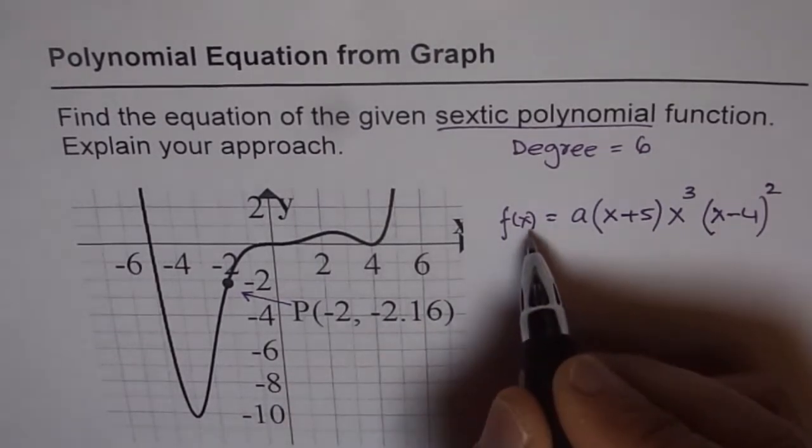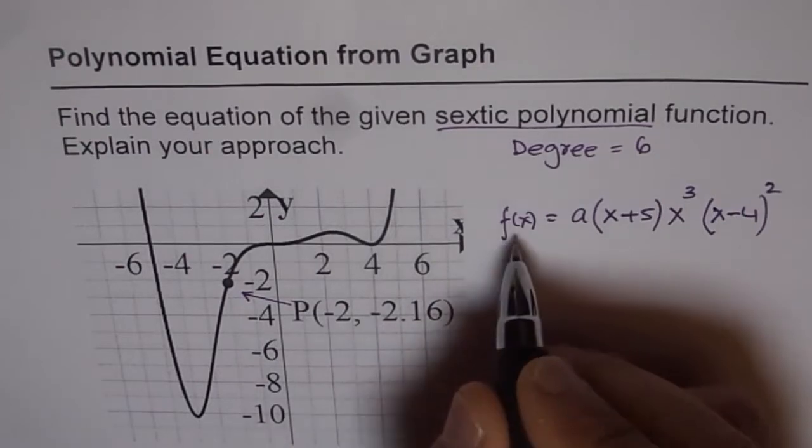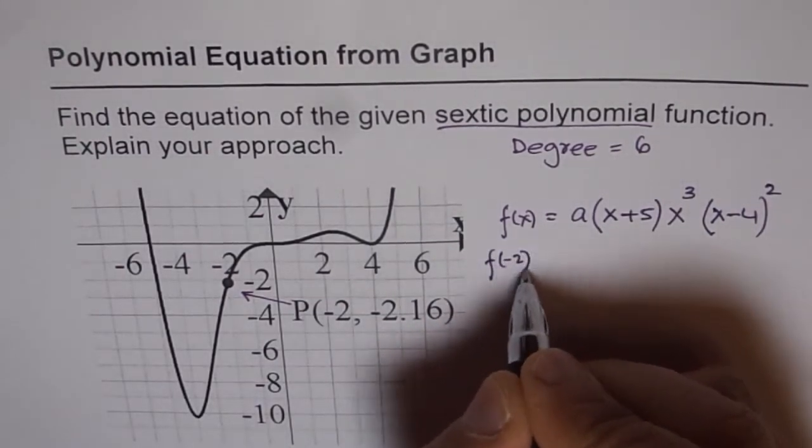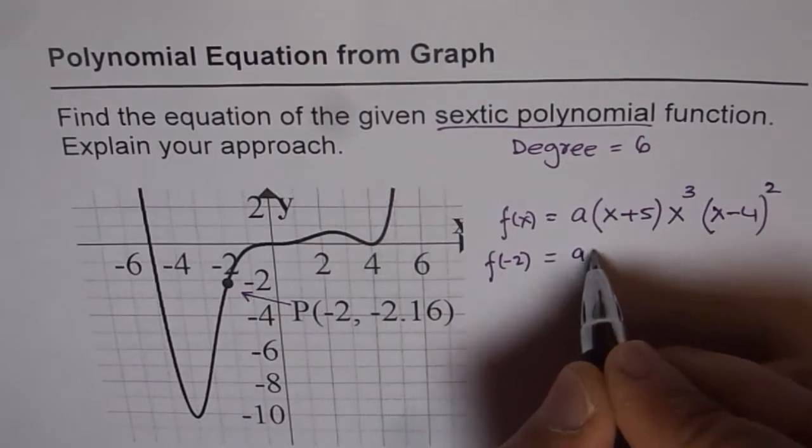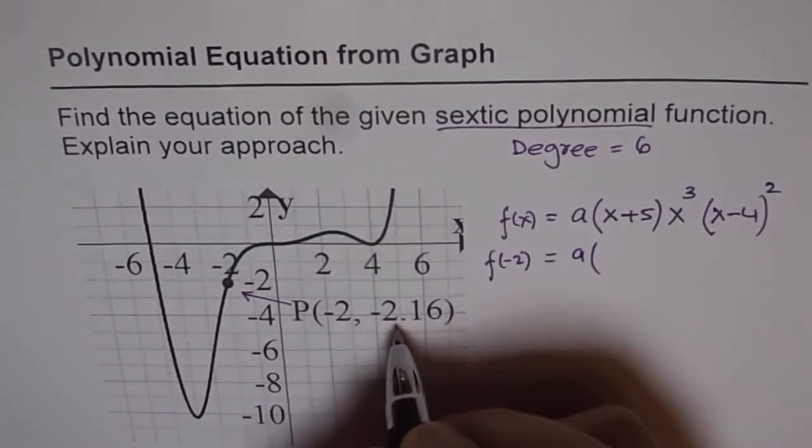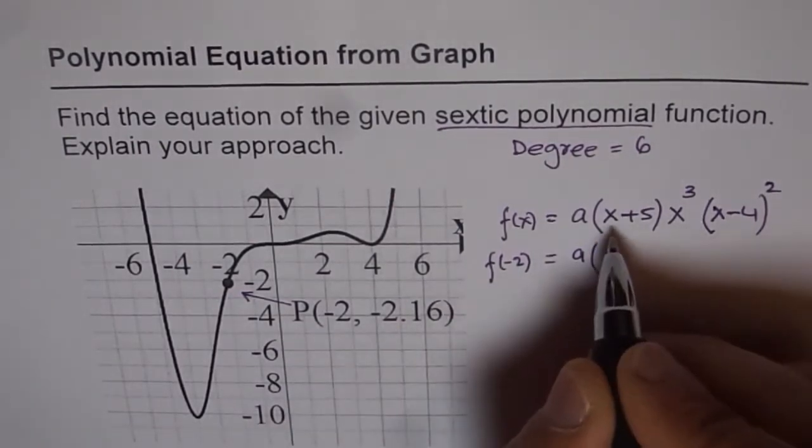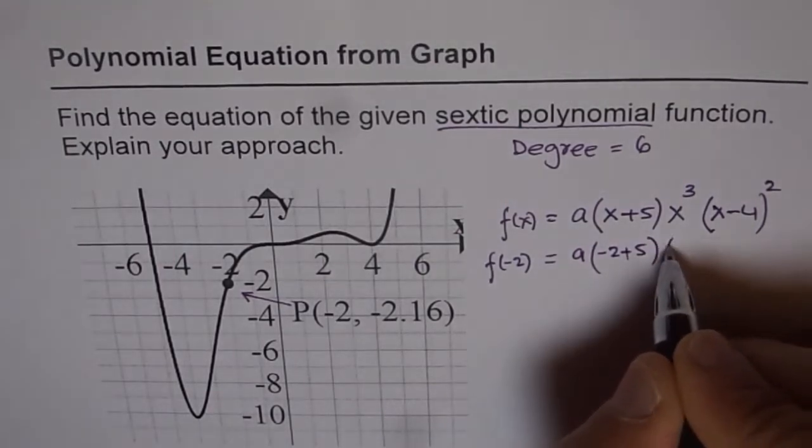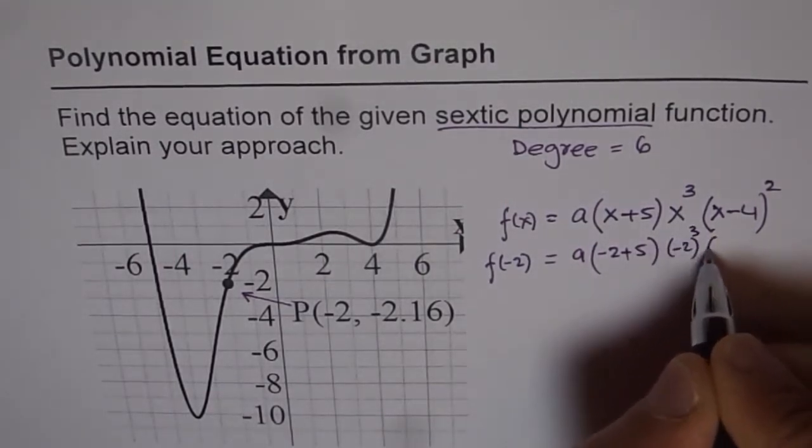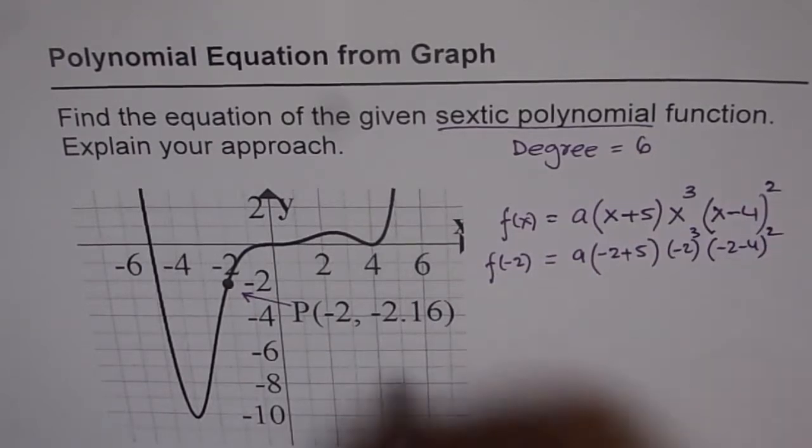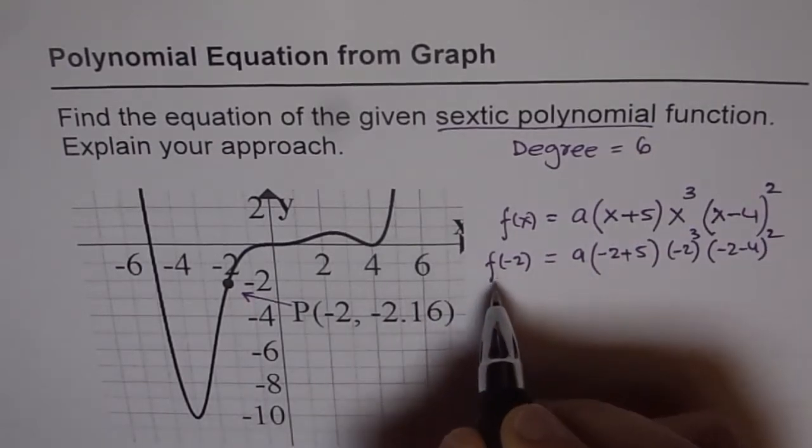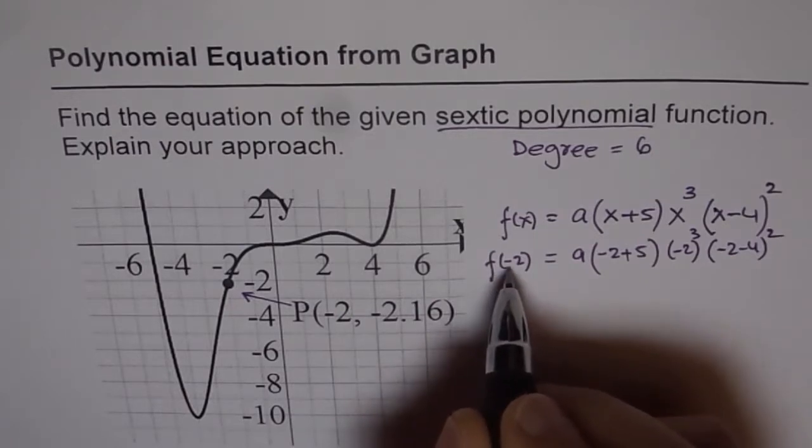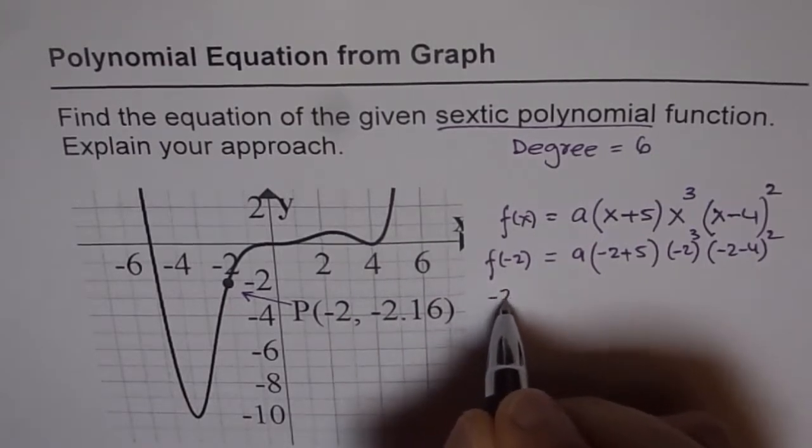So when x is minus 2 then the value of the limit f of minus 2 is equal to a times. Let us write minus 2 for all the x values. So we have minus 2 plus 5 times minus 2 cube times minus 2 minus 4 square. This is what we get. Now the value of the function at minus 2 is minus 2.16.